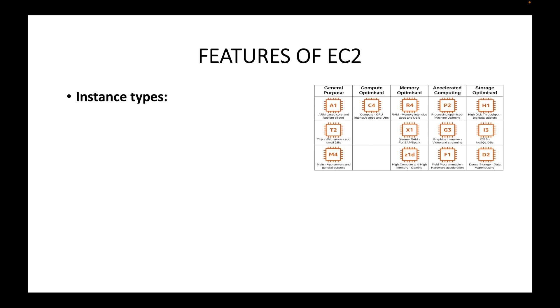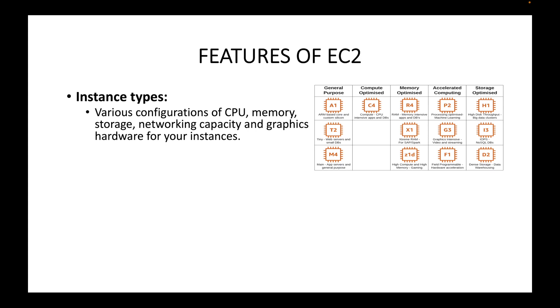Then we have instance types. Depending on your capacity needs — maybe two CPU cores and four GB RAM, or four CPU cores and eight GB RAM — all those configurations are categorized into instance types. Depending on the application you want to run and the capacity you need, you can choose the appropriate instance type. This provides various configurations of CPU, memory, storage, networking capacity, and even GPU graphics hardware.